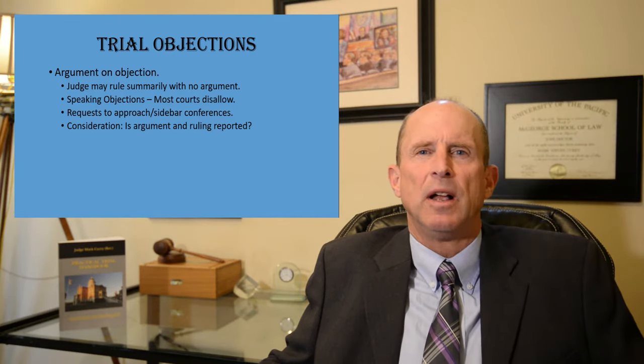Number eleven is assumes facts not in evidence — generally when some preliminary fact has not been established. This occurs when your opponent's questions seem to assume, for example, that the witness was personally present at the scene. If the first question is 'Now when the red car ran the red light, where were you standing?' — that assumes facts not in evidence because the witness hasn't testified yet that they were present or had any personal knowledge. You can see how this ties together with the personal knowledge objection.